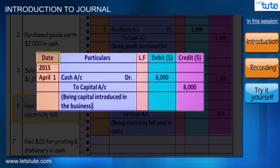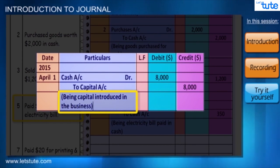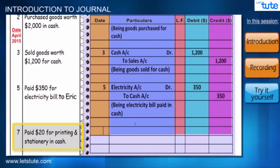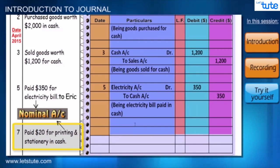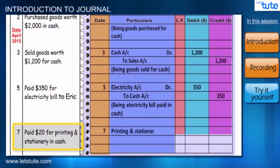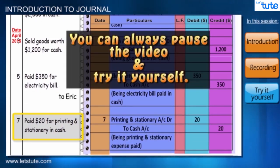Now we know that to record a transaction in a journal book we record the date, journal entry, debit amount, credit amount, and the narration below for future reference. Can you tell the journal entry for this transaction? It is very similar to the previous expense — both expenses belong to the nominal account, so they are debited. Recording the journal entry as: printing and stationery account debit, to cash account. From now on, try to record the transactions before the answers appear on screen.